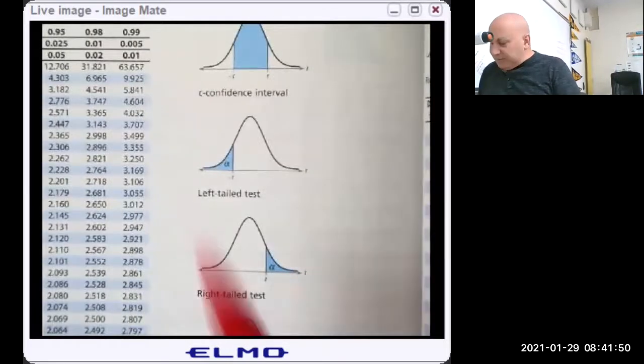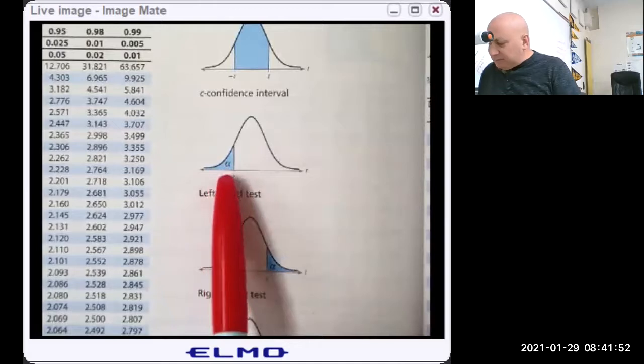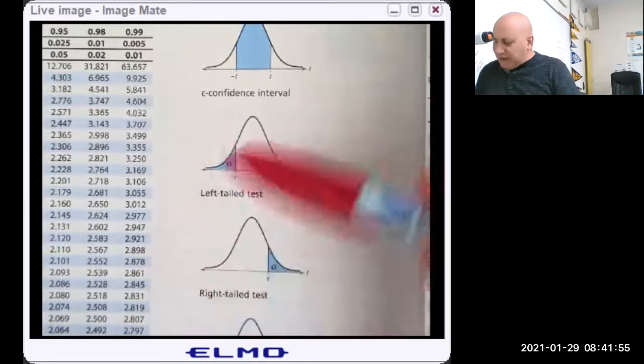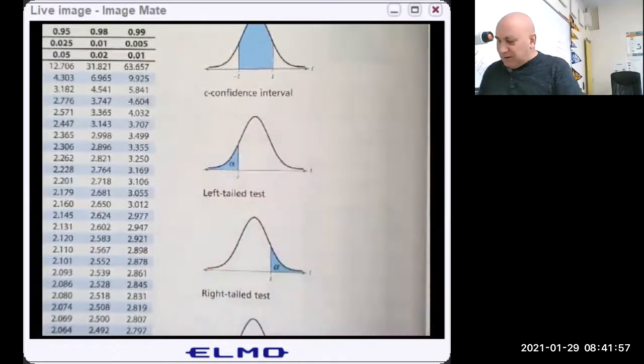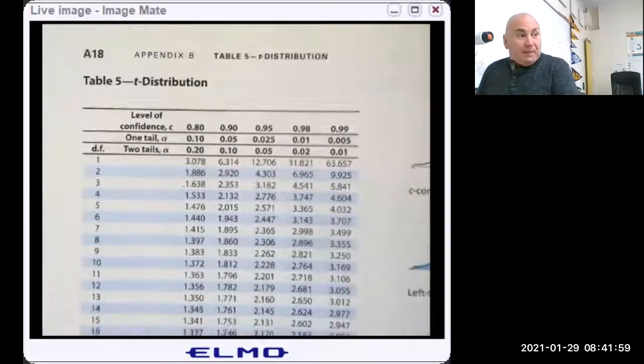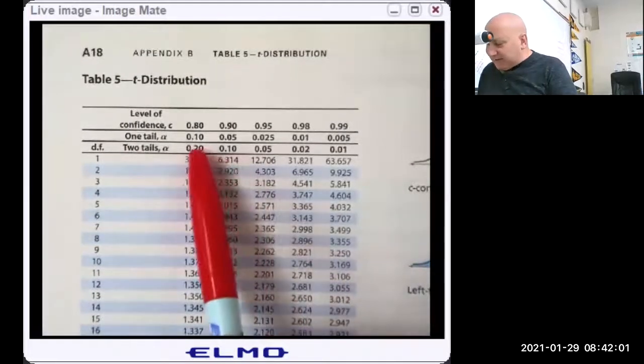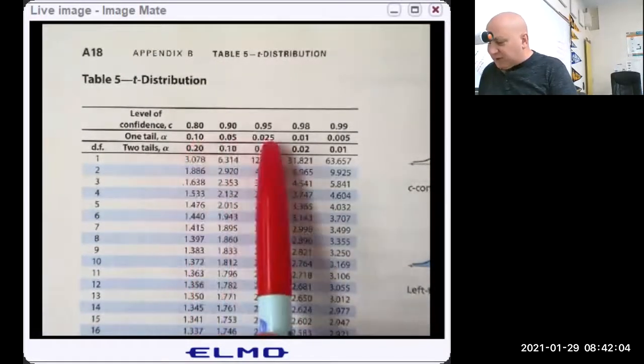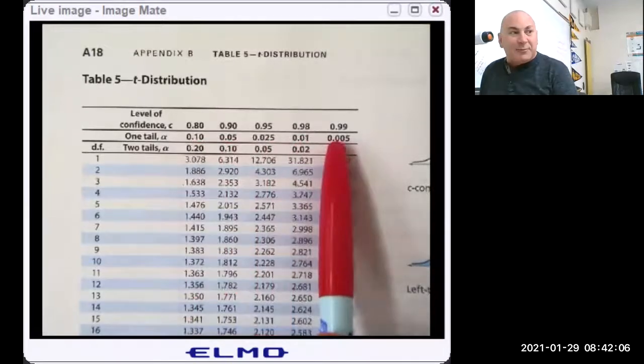These are our confidence levels using this table. We can only make confidence intervals of 80, 90, 95, 98, and 99 percent confidence. If I want to know something about the left tail, the left tail alpha, so alpha might be 5 percent, the only tail sizes that I can consider are 10, 5, 2 and a half, 1, or a half a percent.